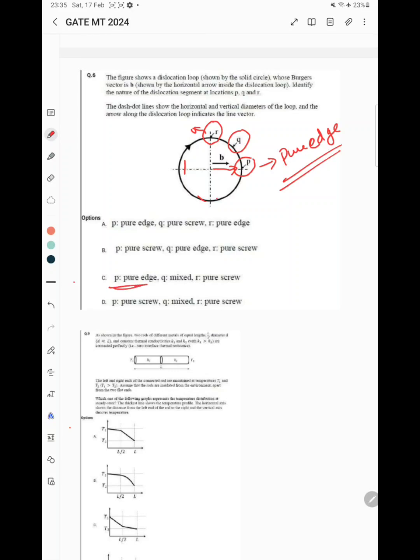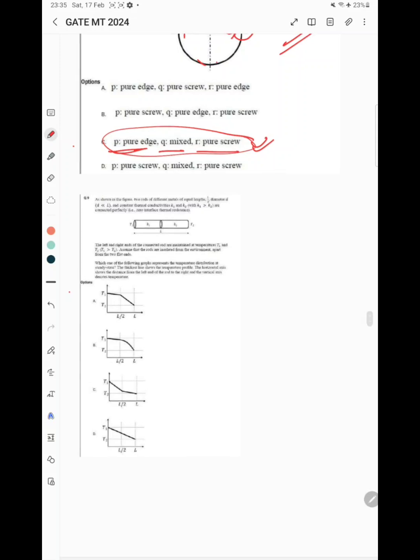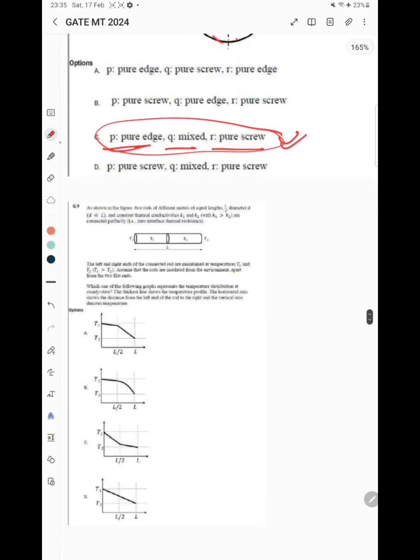If you see answer C here: P is pure edge, Q is mixed, R is pure screw. So this option is correct. The next question is about two rods of different metals of equal length L, diameter D, and constant thermal conductivity k1 and k2 connected perfectly.